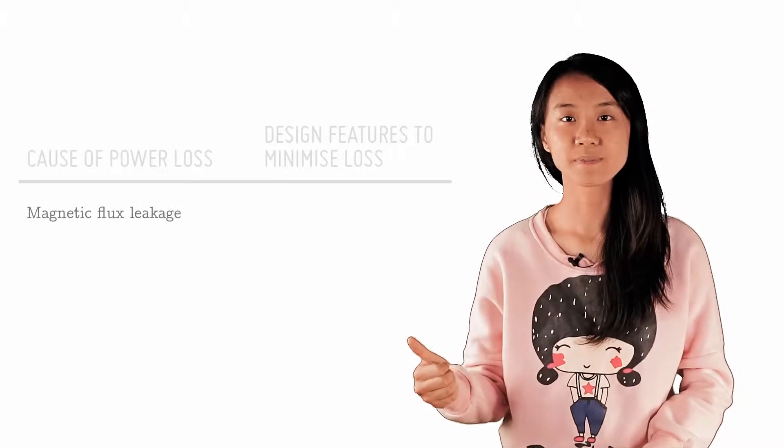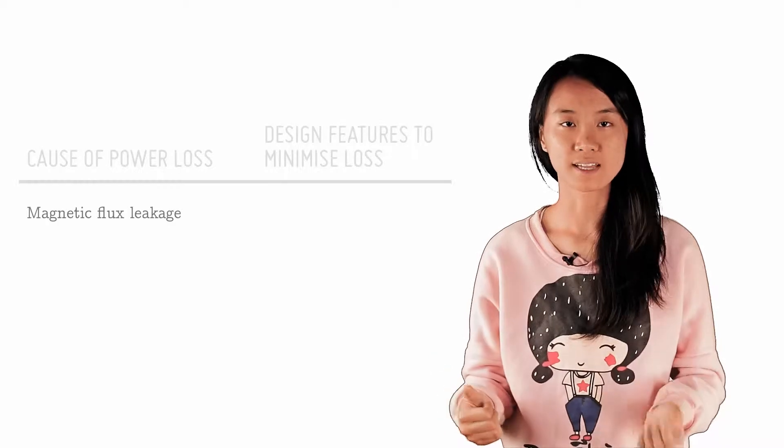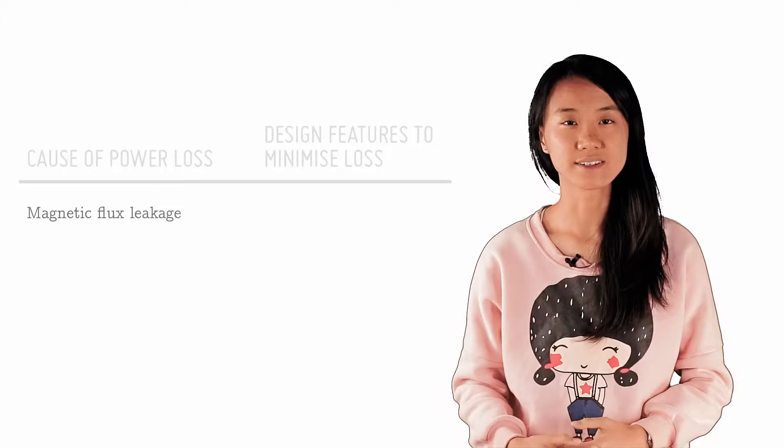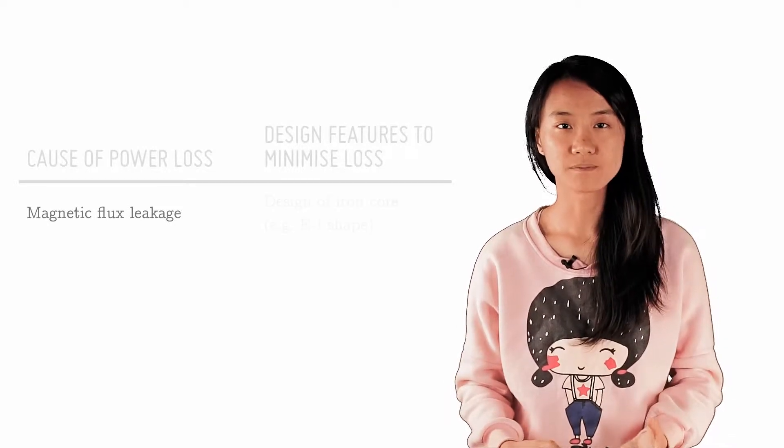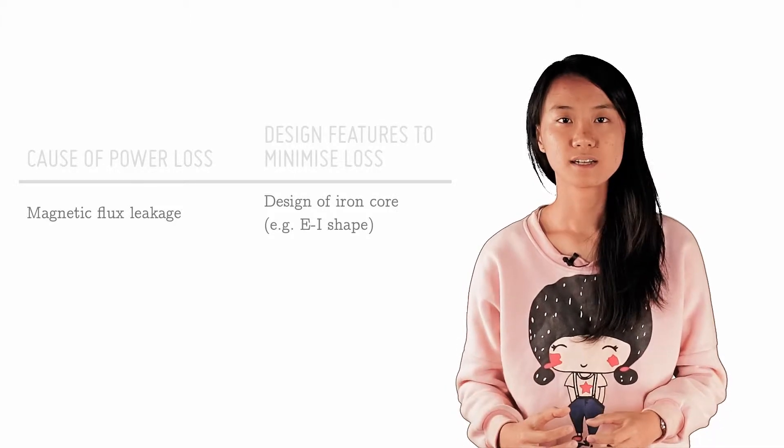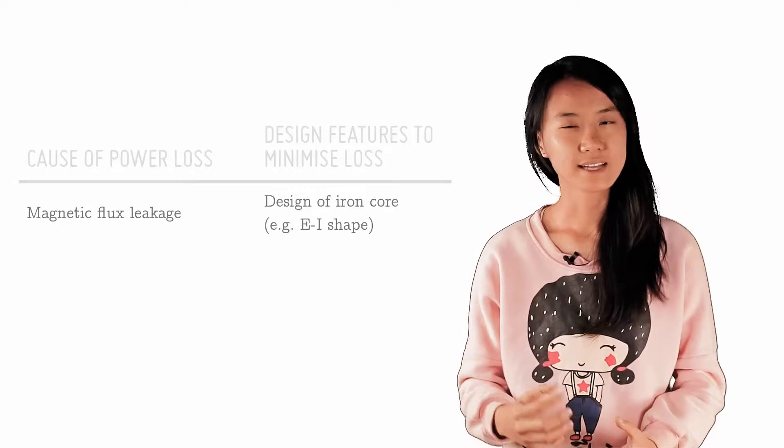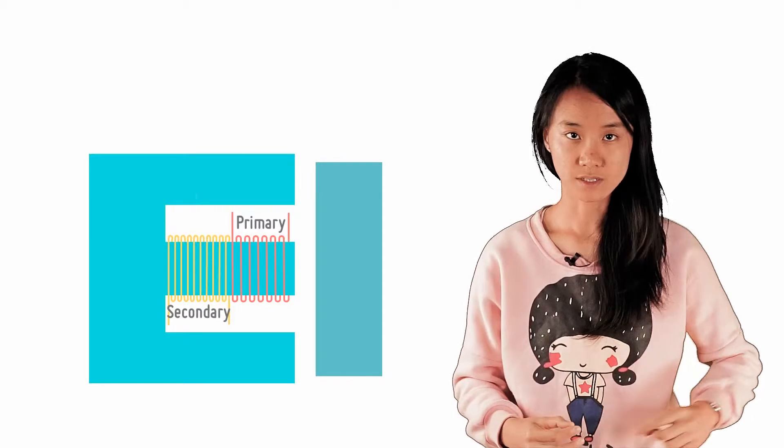Firstly, some of the magnetic field lines produced by the primary coil do not link well to the secondary coil, reducing the EMF induced in the secondary coil. However, the presence of the iron core maximizes the flux linkage between the primary and secondary coil. For example, when designing an EI shape, the secondary coil is wound on top of the primary coil, and the iron core forms a closed loop.